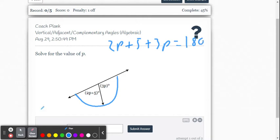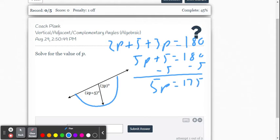We're going to combine like terms, so we're going to get 5p plus 5 equals 180. We're going to subtract 5 from both sides to isolate the p by itself, so we have 5p equals 175. We know we want 1p, so we're going to divide both sides by 5.